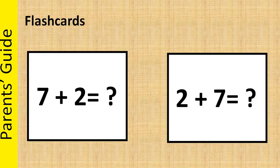Once your child is familiar with adding 2 and 3 to a number, you can teach different combinations. Flashcards can be very helpful in doing this. You can make flashcards at home by cutting a piece of paper or cardboard. You can write 7 plus 2 on the front and 2 plus 7 on the back and ask your child to answer. By doing this, your child will become very familiar with all the different combinations.